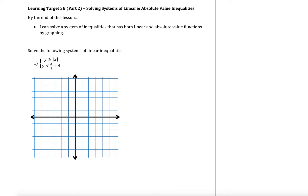And in this video, we're going to see what happens if I still have one inequality that's a linear function, but what if the other inequality becomes an absolute value? So let's look at our first example. In example 1, we have a system of inequalities. The first one is y is greater than or equal to the absolute value of x, and our second function is y is less than x over 2 plus 4.